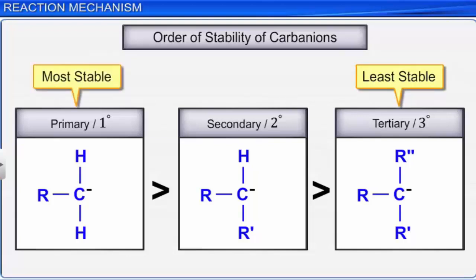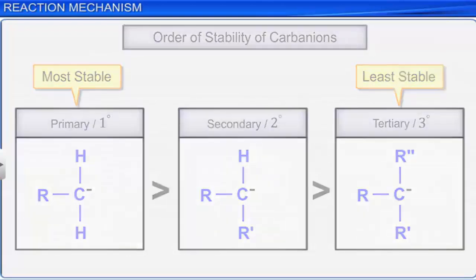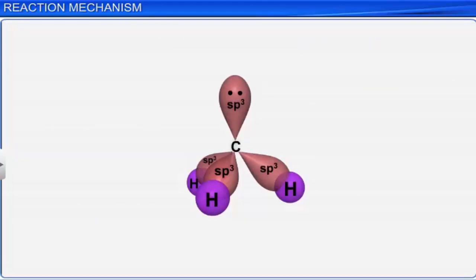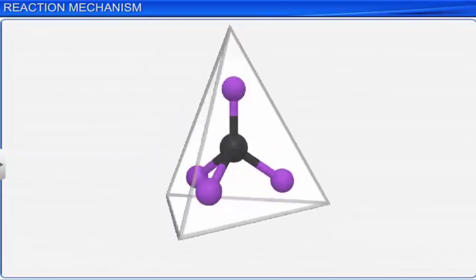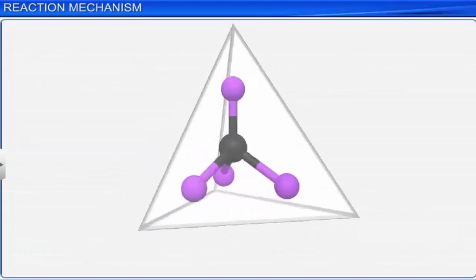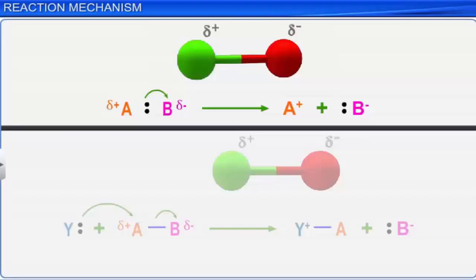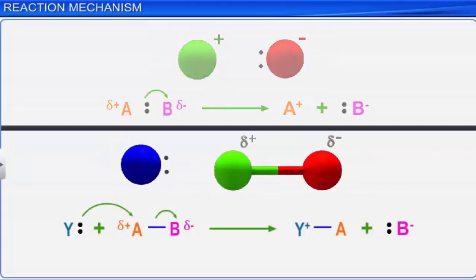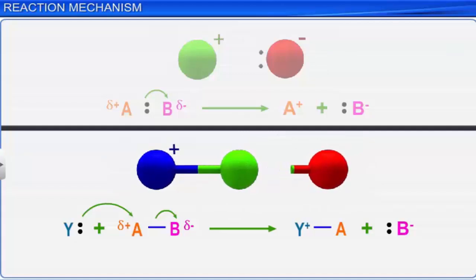The shape of a carbanion is tetrahedral. All the organic reactions preceded by heterolytic bond cleavage are known as ionic, hetero-polar, or polar reactions.